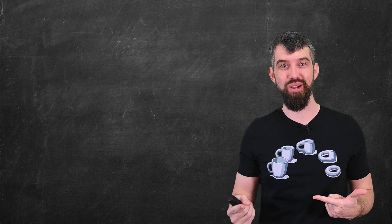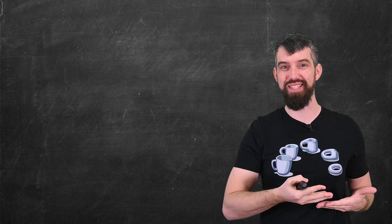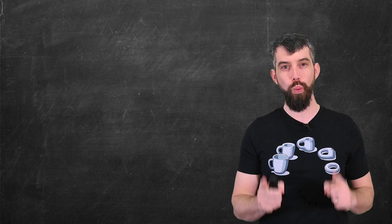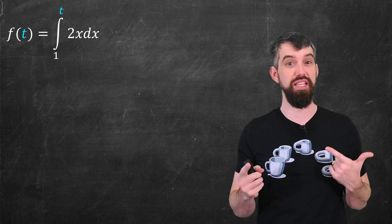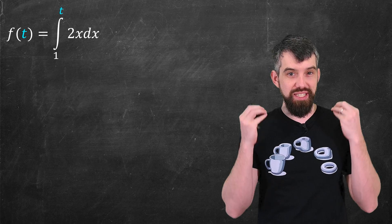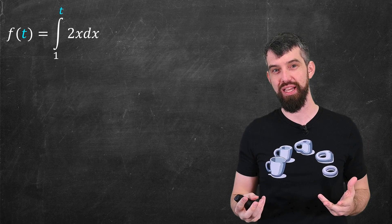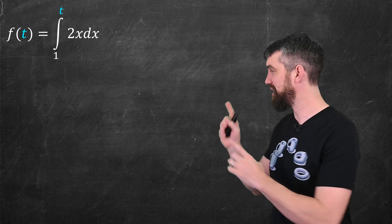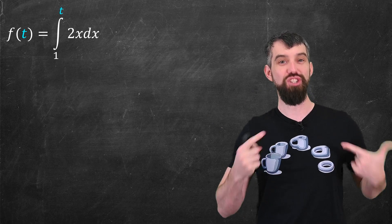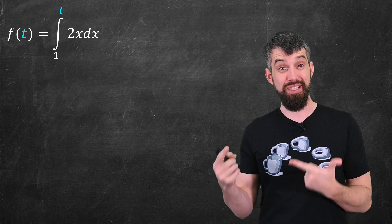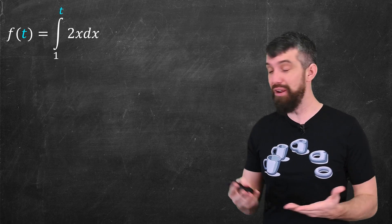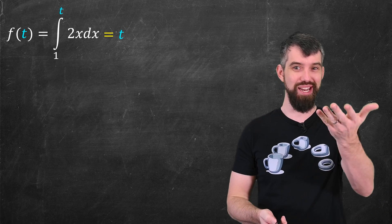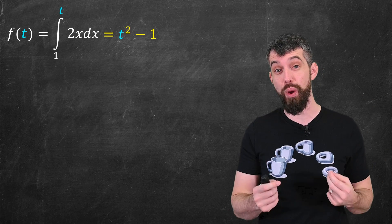The first thing we should probably talk about is what exactly do I mean by this tower of integrals? Well, let me begin by defining the function f(t), which is the integral from 1 up to t of 2x dx. And the idea here is that this object is just a function for any value of t. We get a definite integral and you get some output. In fact, this integral is an easy one to do. We can integrate it directly and just get t squared minus 1.